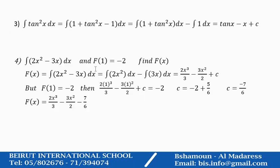A third example: we would like to find the integration of tan squared x dx. As you know, tan squared x does not have a rule, but 1 plus tan squared x does have a rule. So you add 1 and subtract 1 — you don't change the value. By adding 1, you end up with the integration of (1 plus tan squared x) dx minus the integration of 1 dx. By the rule, the integration of 1 plus tan squared x is tan x.